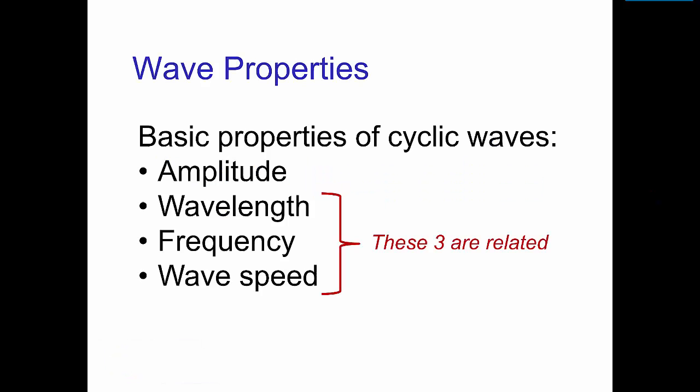Wave properties. There are several basic properties of cyclic waves. The previous video discussed wave amplitude, such as the loudness of a sound wave. Now we're going to look at three other important properties: wavelength, frequency, and wave speed. These three properties are not independent, and we'll see how they're related.